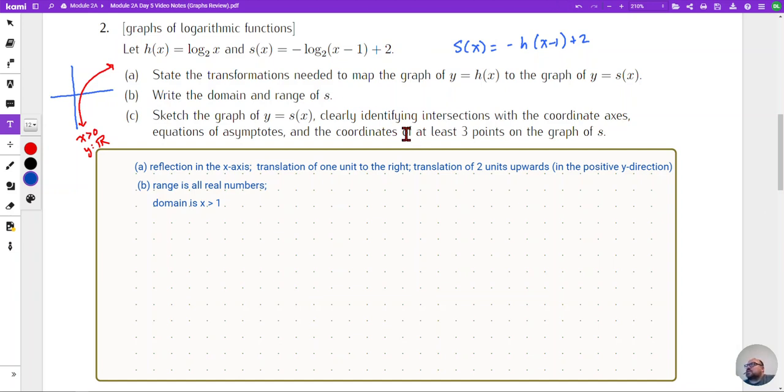I want to sketch the graph clearly identifying intersections with the coordinate axes and equations of asymptotes and the coordinates of at least three points on the graph of s. All right so quite a bit to do there. So we're going to set up our axes. All right we'll just say that these are our axes.